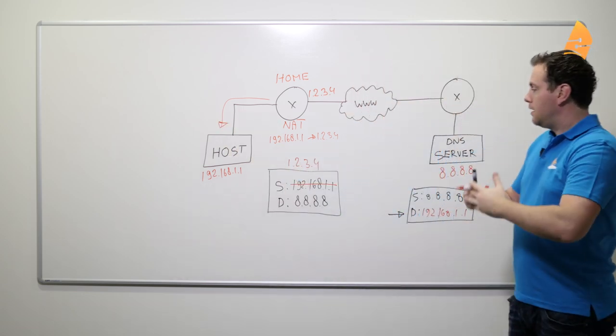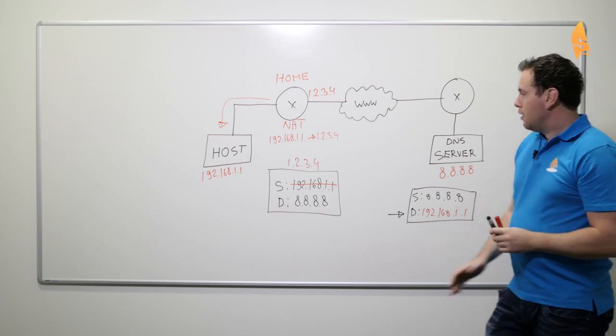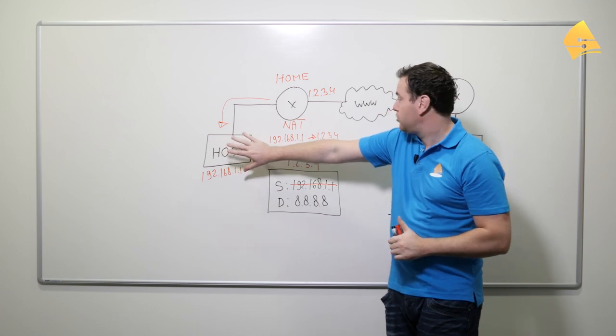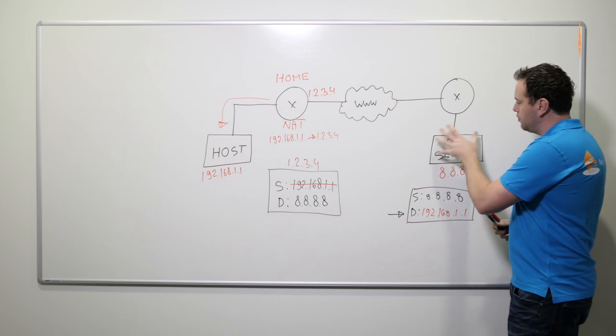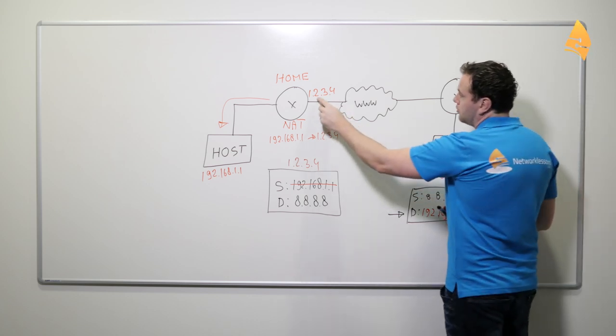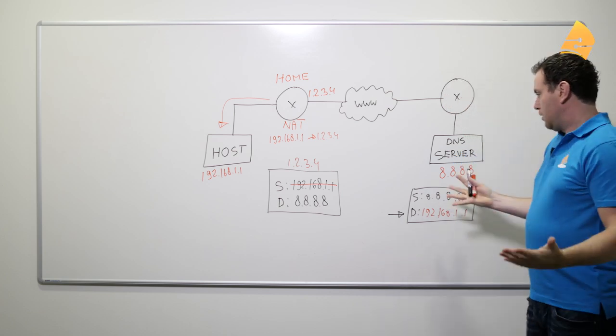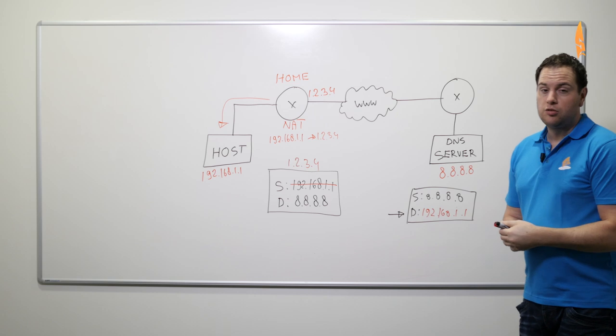And then everything is working fine. So the host has no clue that its IP address is being changed. Only this router does. And the DNS server over here, it thinks that it is talking with this IP address. So that's how network address translation works.